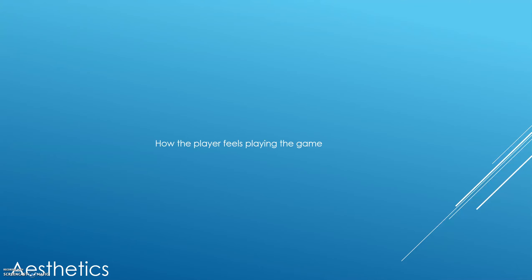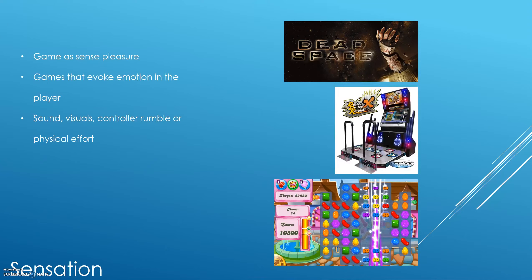Next is Aesthetics in the MDA Framework — how the player feels playing the game. Because the word 'fun' isn't very descriptive, there are eight descriptions of the aesthetic. The first is Sensation: the game as sense pleasure — games that evoke emotion through sound, visuals, control, rumble, or physical effort. Examples include Dead Space for the horror feeling, Dance Revolution as a physical game, or the graphics and sound of Candy Crush.